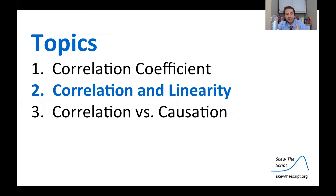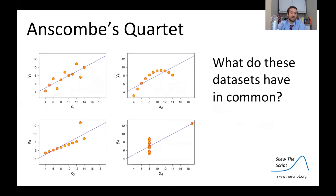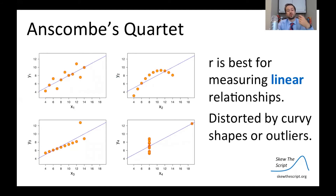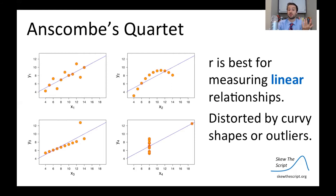Let's turn to correlation and linearity, which is a deceptively interesting topic. This is a very famous data set called Anscombe's Quartet — four different data sets plotted here that all look super different, with different x and y values. Surprisingly, they all have the same correlation of 0.67. That's because the correlation coefficient r is best used for linear relationships, like the top left chart in Anscombe's Quartet. It can be distorted by curvy shapes or outliers, which you can see on the bottom two charts. Unfortunately, correlation is restricted to linear relationships; otherwise, you can get some strange results.